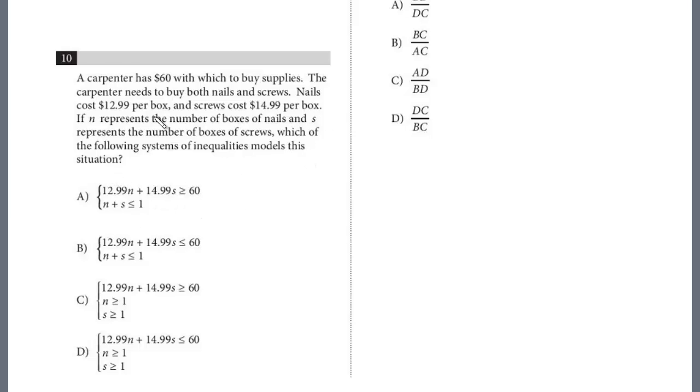And so here, similar to the last question we just did, let's work on the first equation for the amount of items. We know he has to buy, he must buy both nails and screws. And so would it be nails plus screws is less than or equal to 1? That really doesn't make sense, right? Nails plus screws less than or equal to 1.